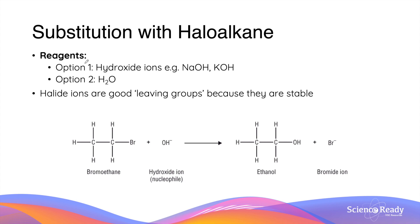The second reaction to produce an alcohol is substitution with a haloalkane. There are two possible reagents: option one is a strong base that contains hydroxide ions, such as sodium hydroxide or potassium hydroxide; option two is water. In this substitution reaction, the hydroxide ion — either from the strong base or from water — is able to replace or substitute the halogen in the haloalkane molecule.